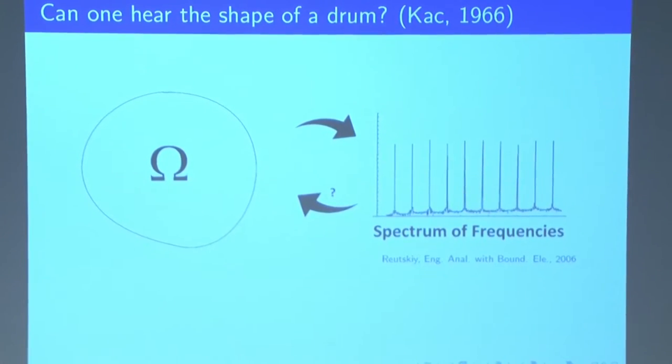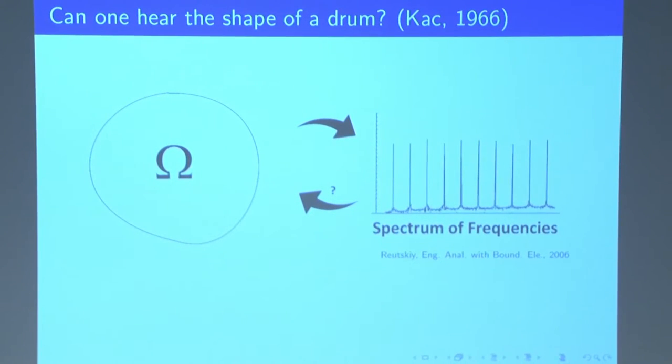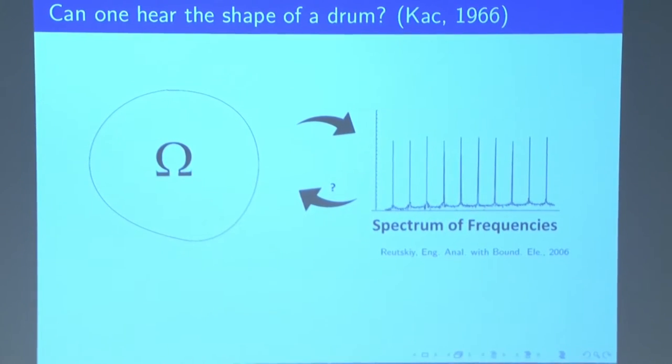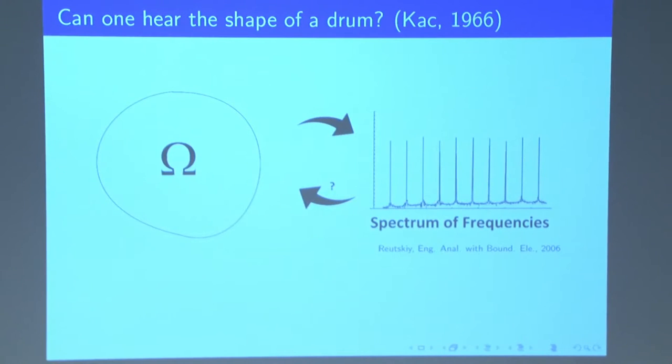So I'll be clear what exactly he means by this question. So it's known that if we know exactly the shape of our drum, which we'll call omega, then we can determine exactly what frequencies are produced by our drum. So the question Kac is asking is, well, if instead we know the exact distribution of frequencies, what can we know about the shape of our drum?